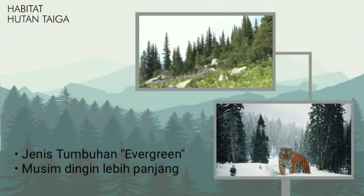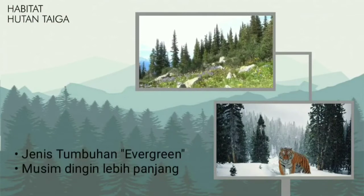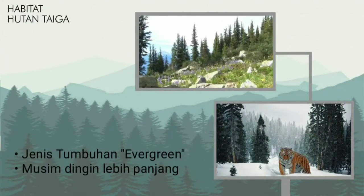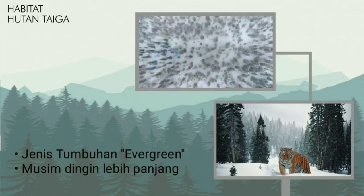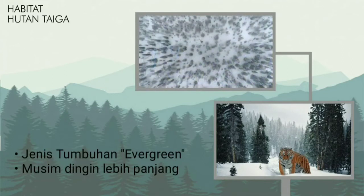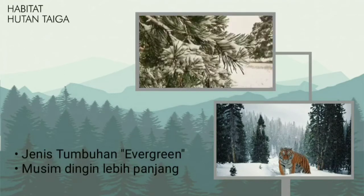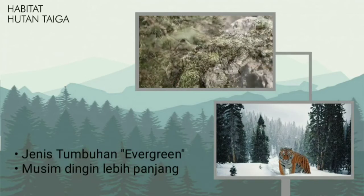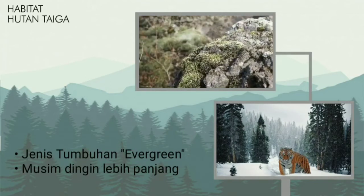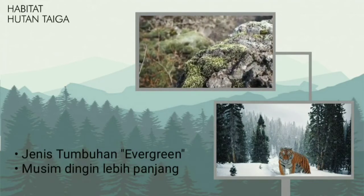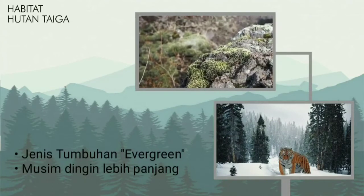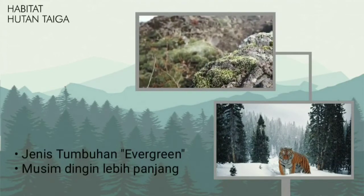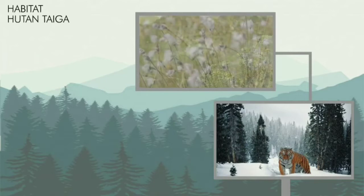Yang keenam, ada daerah hutan taiga. Tumbuhan di hutan taiga didominasi oleh tumbuhan berdaun jarum atau konifer dan akan selalu ada sepanjang tahun. Di hutan ini tidak memiliki banyak spesies tanaman dan hewan. Musim dingin di hutan taiga cukup panjang, sedangkan musim panasnya sangat singkat.